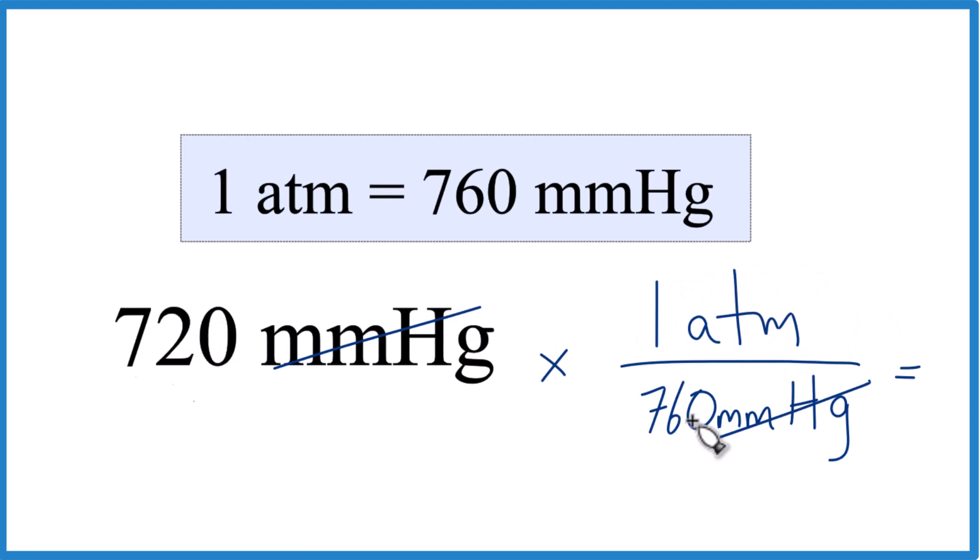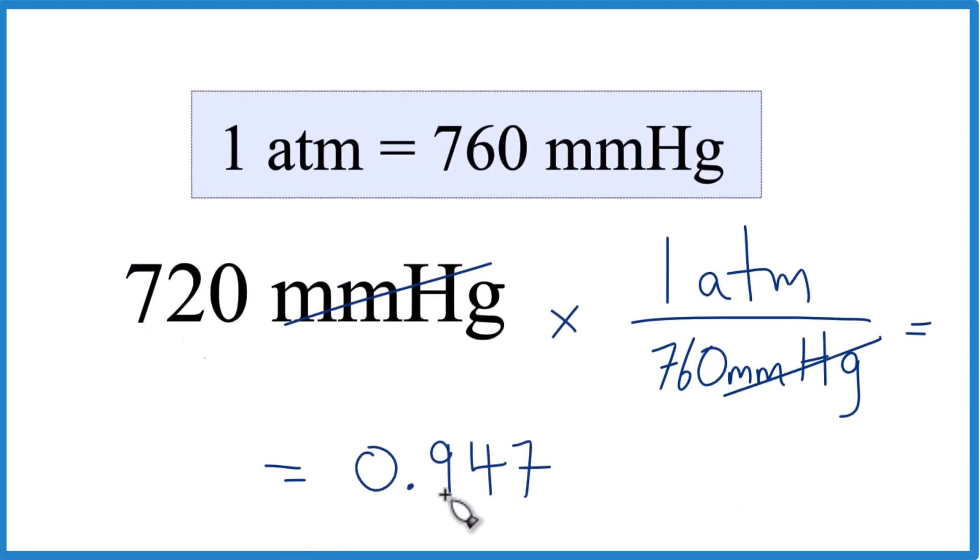So 720 divided by 760 equals 0.9473. Let's keep it just 0.947 and our units, that's going to be atmospheres.